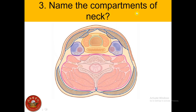The compartments of the neck — in a transverse section of the neck, we can see four compartments. The yellow color represents the visceral compartment, containing visceral structures. On both sides we have the vascular compartments, containing vessels and nerves. Posteriorly, we have the vertebral compartment containing the vertebra and associated muscles. So: one visceral, two vascular, one vertebral — four compartments total in the neck.